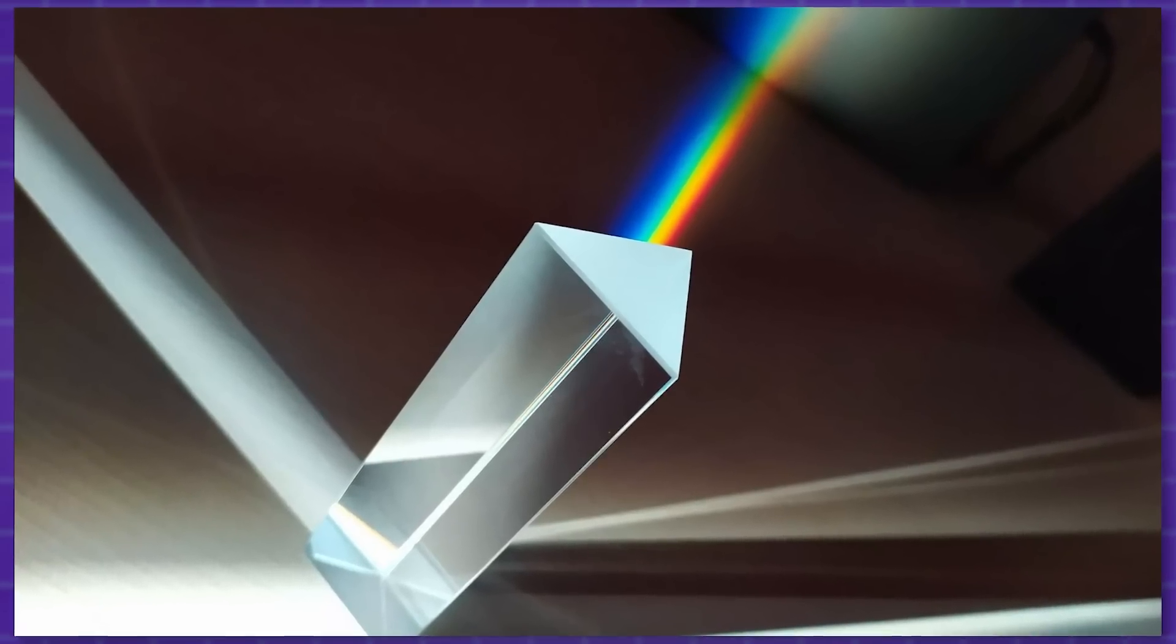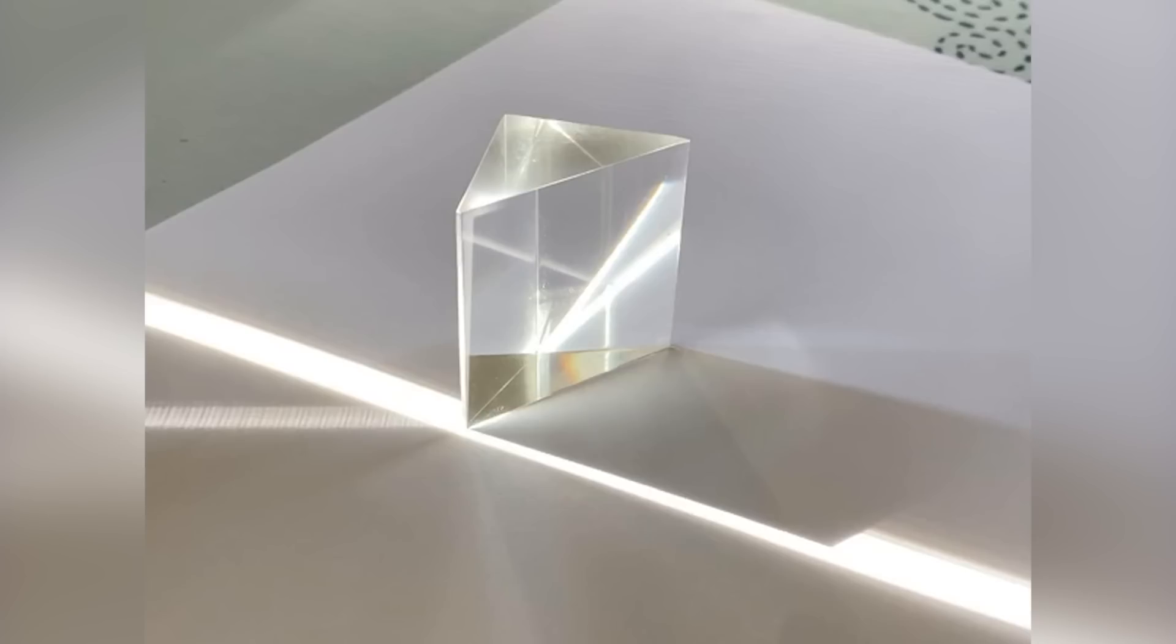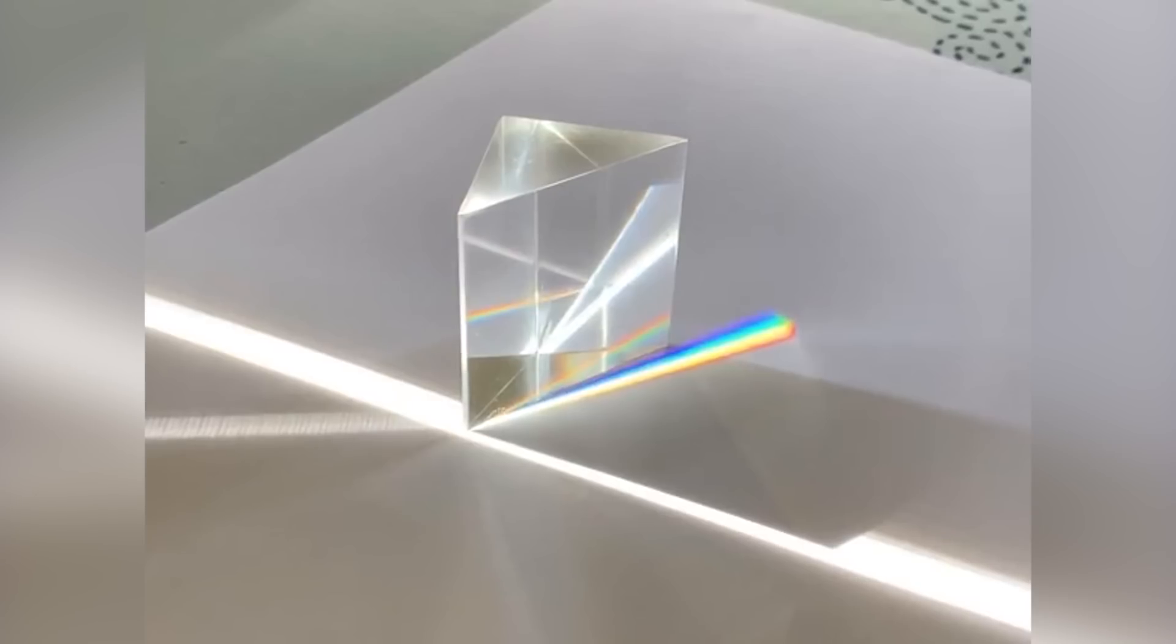For example, imagine sunlight passing through a glass prism. The triangular shape of the prism causes the light to refract at different angles depending on its wavelength. As a result, the colors of the spectrum spread out and form a rainbow-like pattern on a surface behind the prism. These color patterns are a form of refraction caustics in the glass, which is really interesting.